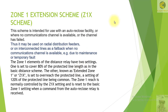The scheme we are going to discuss is Zone 1 Extension scheme, written in short form as Z1X scheme. This scheme is intended for use with an auto-reclose facility or where no communication channel is available or the channel has failed. Thus it may be used on radial distribution feeders or on interconnected lines as a fallback when no communication channel is available, for example due to maintenance or temporary fault.